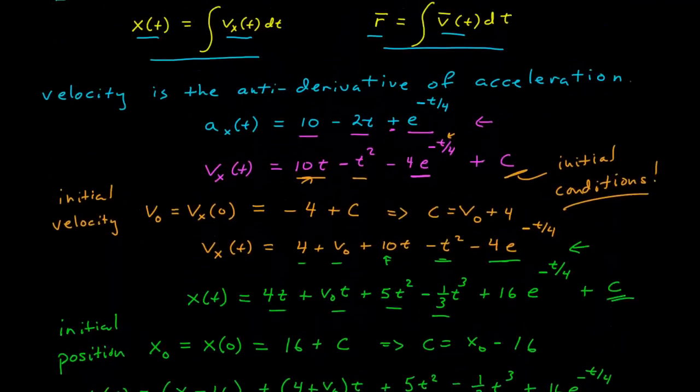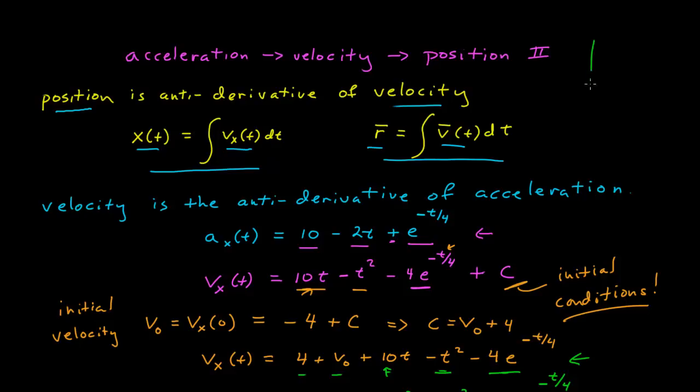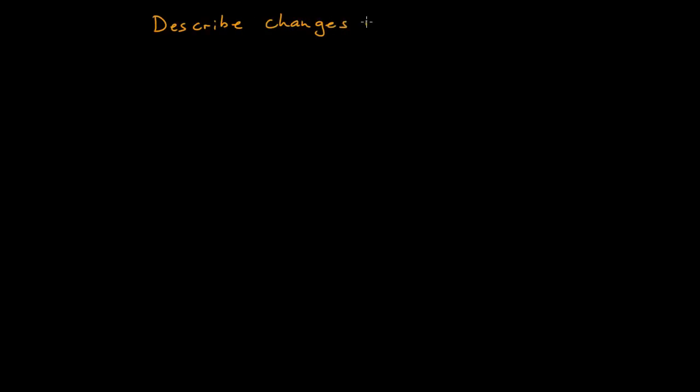That shows using antiderivatives to go from an acceleration function of time, to the velocity as a function of time, to the position as a function of time. Now I want to use the same process to describe changes in position and velocity.